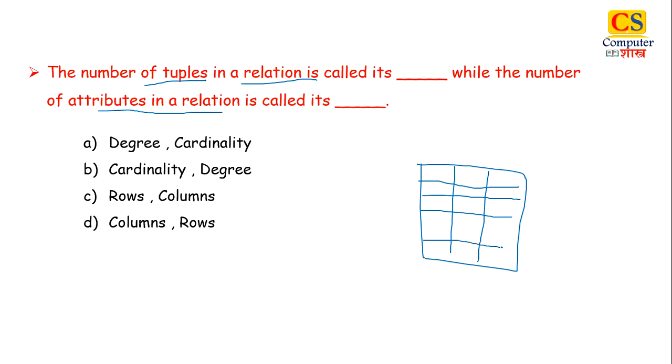The number of columns and the number of rows, the number of cardinality. So in question, first you have number of tuples, that means number of rows, that is your cardinality. So in first blank, you have cardinality while the number of attributes is your degree. So first cardinality then degree. If you check all the options, then you can see that its right answer is option B.